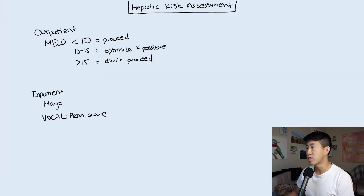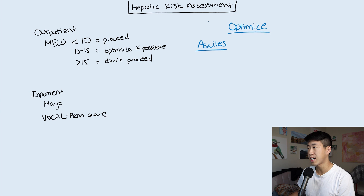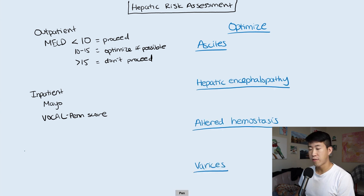Once you've calculated the risk scores, you need to optimize the patient. Common complications we see in patients with cirrhosis include ascites, hepatic encephalopathy, altered hemostasis, varices, and altered pharmacology.